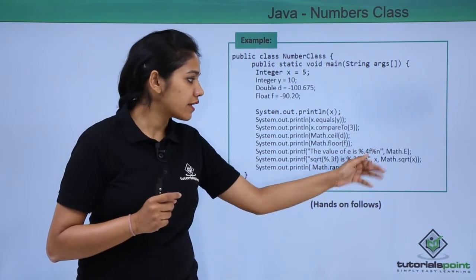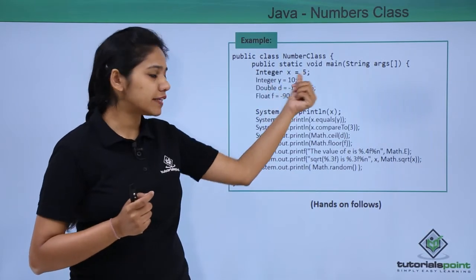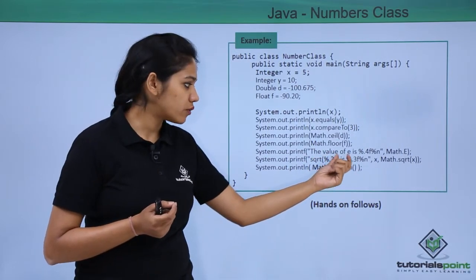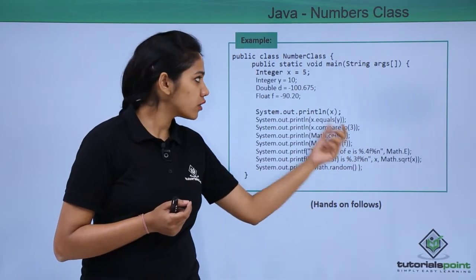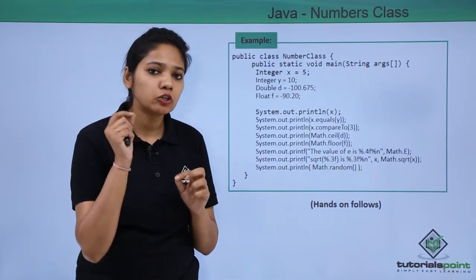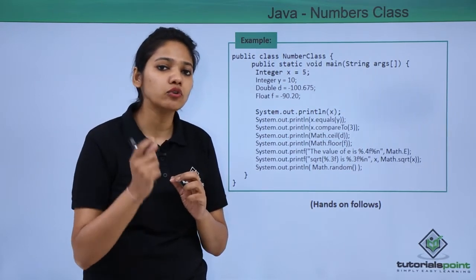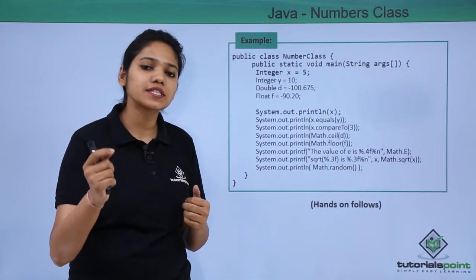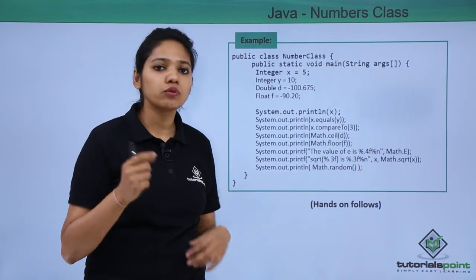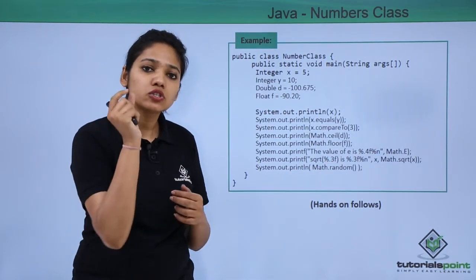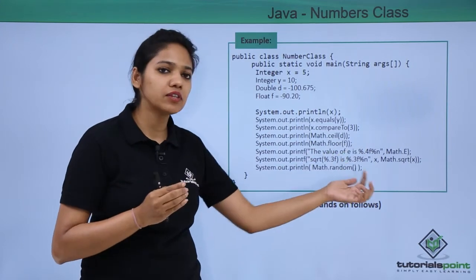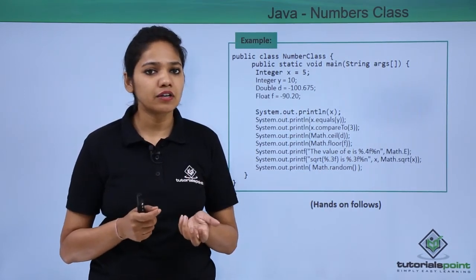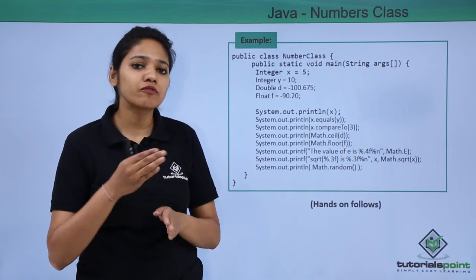Then again we want to find the square root of our integer. It will display the square root value using percentage dot 3 f - the 3 indicates 3 decimal places. Because it is a floating value you write f; if it was a normal integer you would not need to write f. Then we want to find the random value. So these are the few mathematical or number functions we are performing.